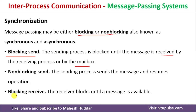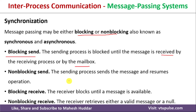In blocking receive, the receiver waits for a message, and if that message is not available in the mailbox, it has to wait and does not do any other work. In non-blocking receive, a process makes a request for a message — if it is available it will be delivered, and if it is not available, the process will not be blocked and will continue its remaining tasks.